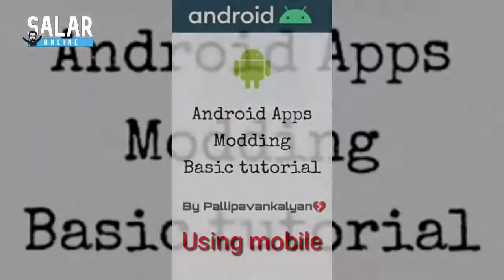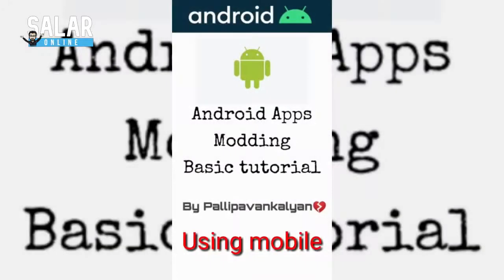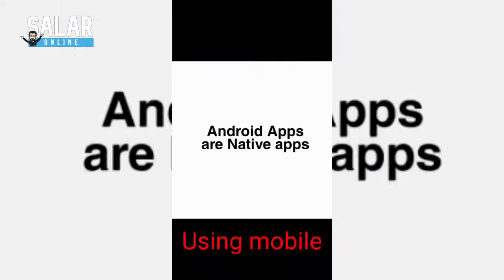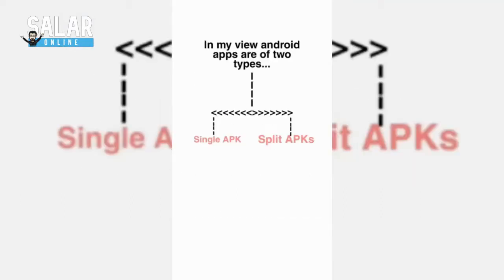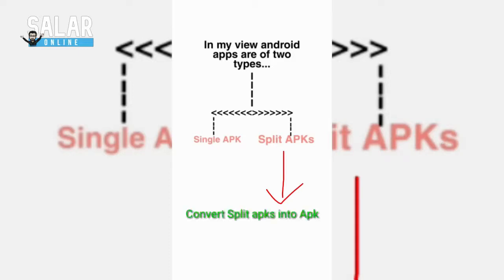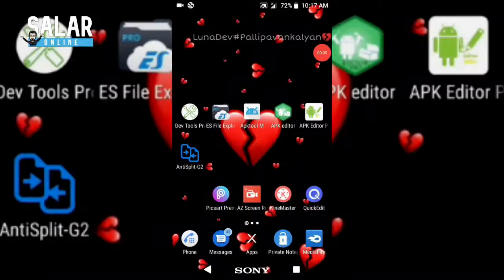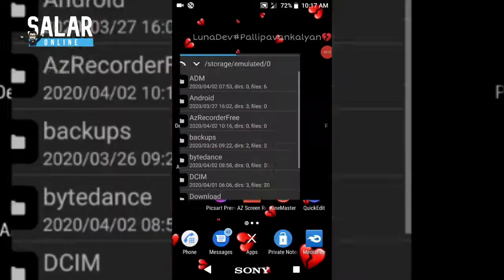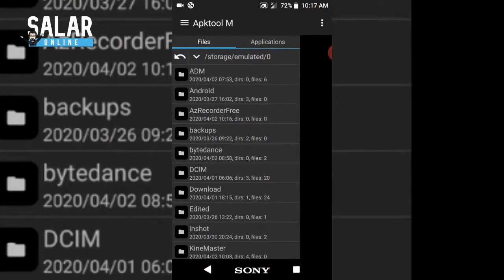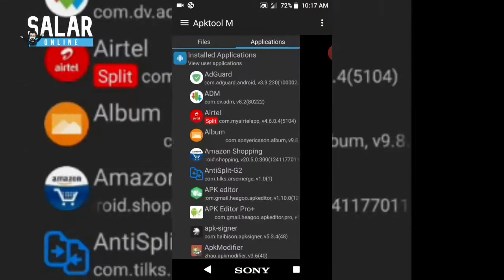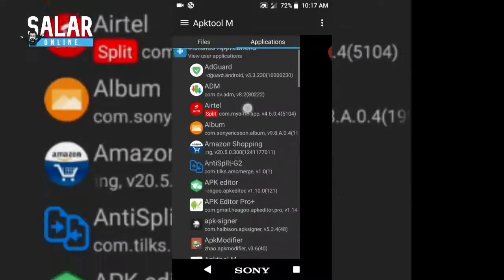Hey there, today I'm going to show you how to mod an application using mobile, for beginners from basic to moderate. Android applications are of two types: single APK and split APKs. Single APK can be modded directly, but split APKs have to be converted into single APK by using some tools. Now I open the APK tool and applications menu.